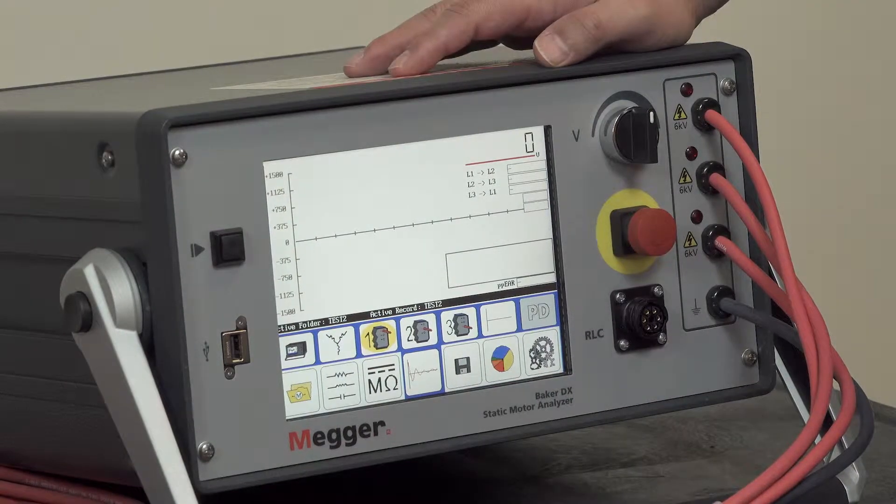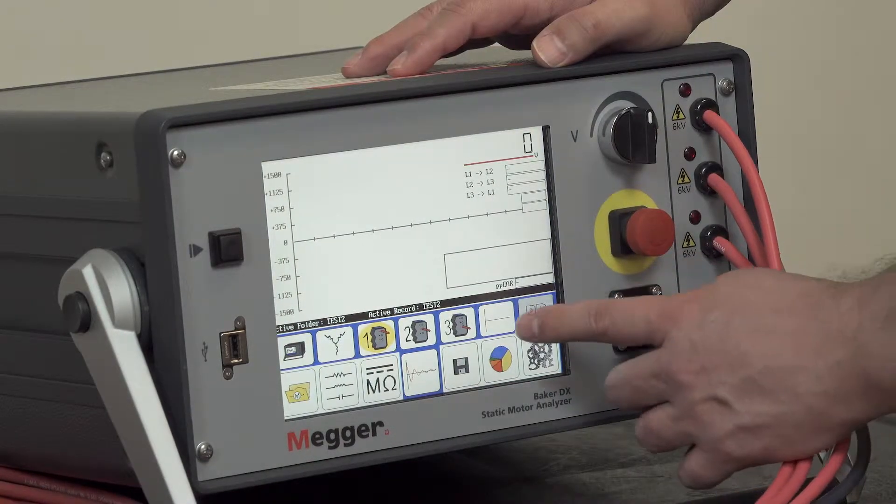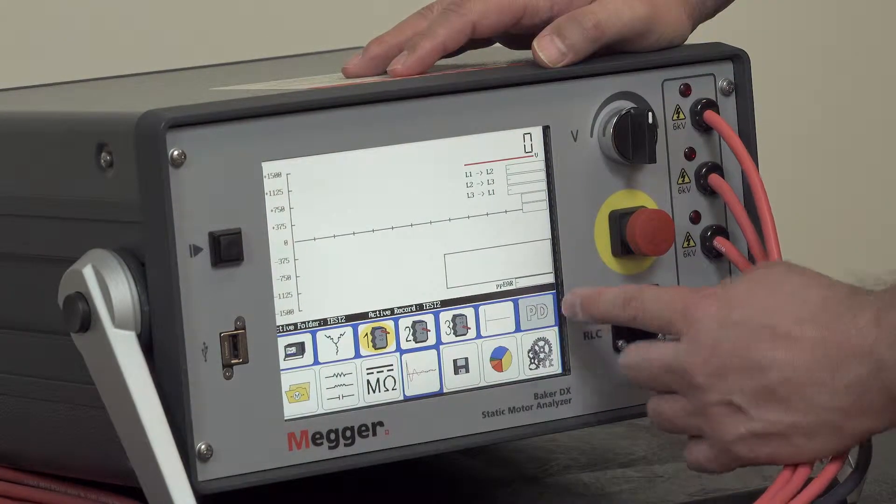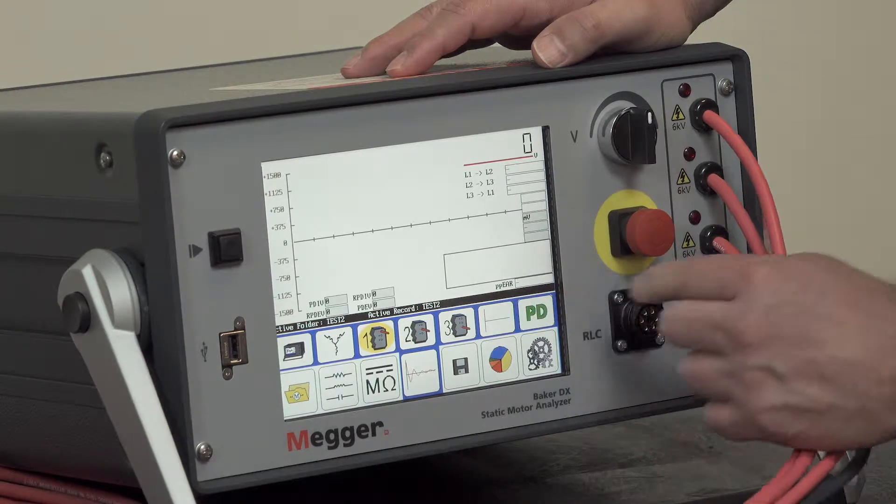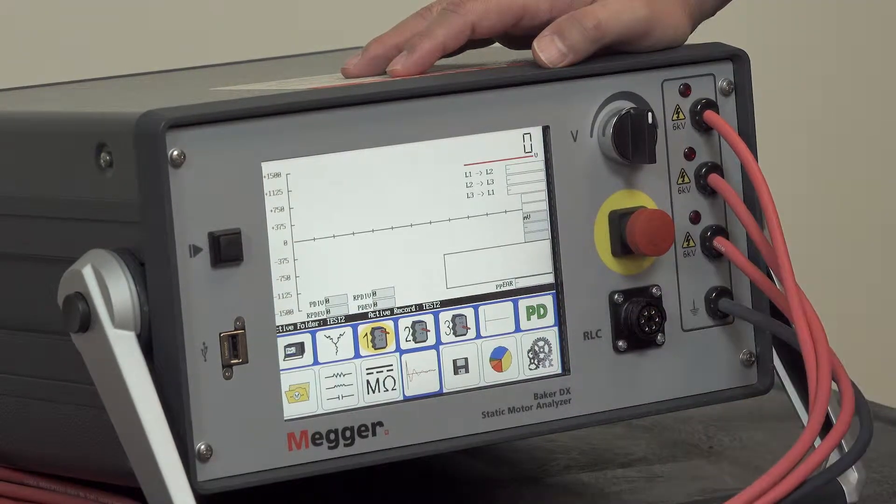If your DX is equipped with the partial discharge module, you'll have an icon on the right that you can select to activate partial discharge. Simply press the button, it turns green to show that it's activated.